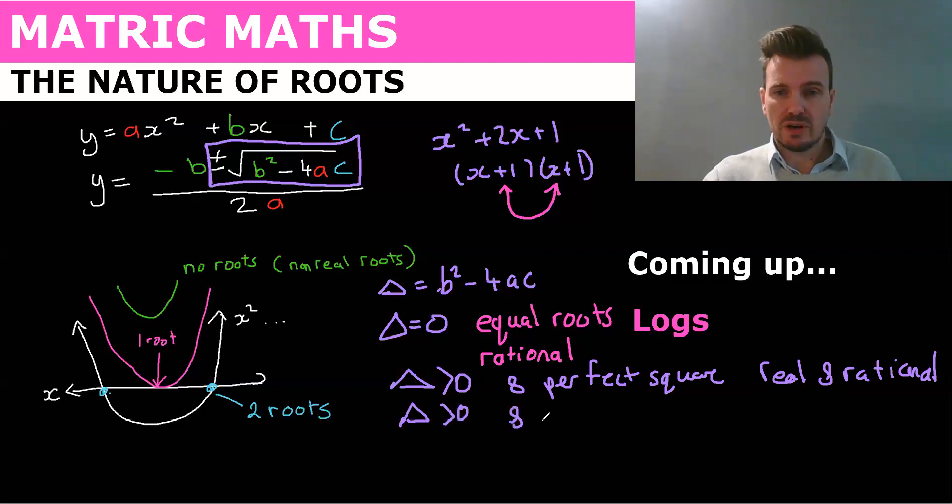If it's greater than zero and not a perfect square, it's still real but it's irrational or non-rational.